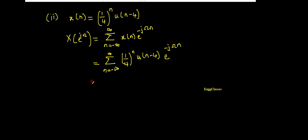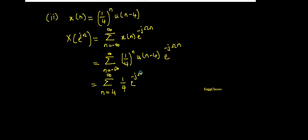If I simplify this further, the lower limit is decided by u(n-4). u(n) is a unit step signal that starts from 0 and extends to infinity. u(n-4) is the shifted version of the unit step signal, shifted to position 4 and extending to infinity. So the lower limit is 4, the upper limit remains infinity, and the amplitude is 1, giving us summation from n = 4 to ∞ of (1/4 * e^{-jω})^n.